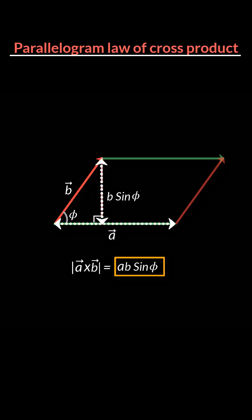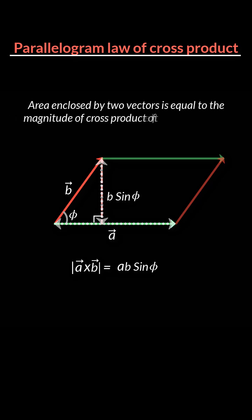This is the parallelogram law of cross product, which states that the area enclosed by two vectors is equal to the magnitude of the cross product of the two vectors. In other words, the magnitude of the resultant vector is equal to the area of the parallelogram enclosed by the two vectors whose cross product is being calculated.